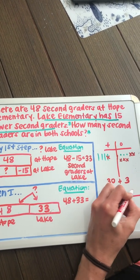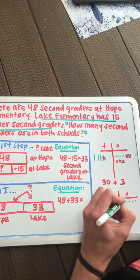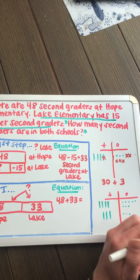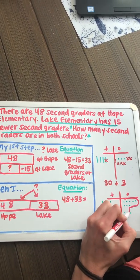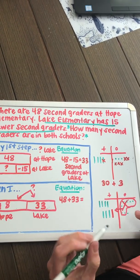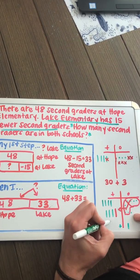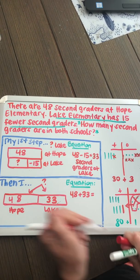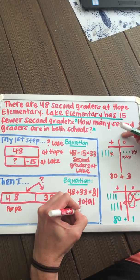Let's start down here with our tens and our ones. We're going to represent both addends. Let's make sure I get 48 this time — there we go — and 33. I notice I have more than ten ones, so I can make a group of ten ones and exchange them for a new ten rod. I have one one left over and 80 from the tens. So I have 80 plus one. When I come to my final equation, I have 81 total second graders.